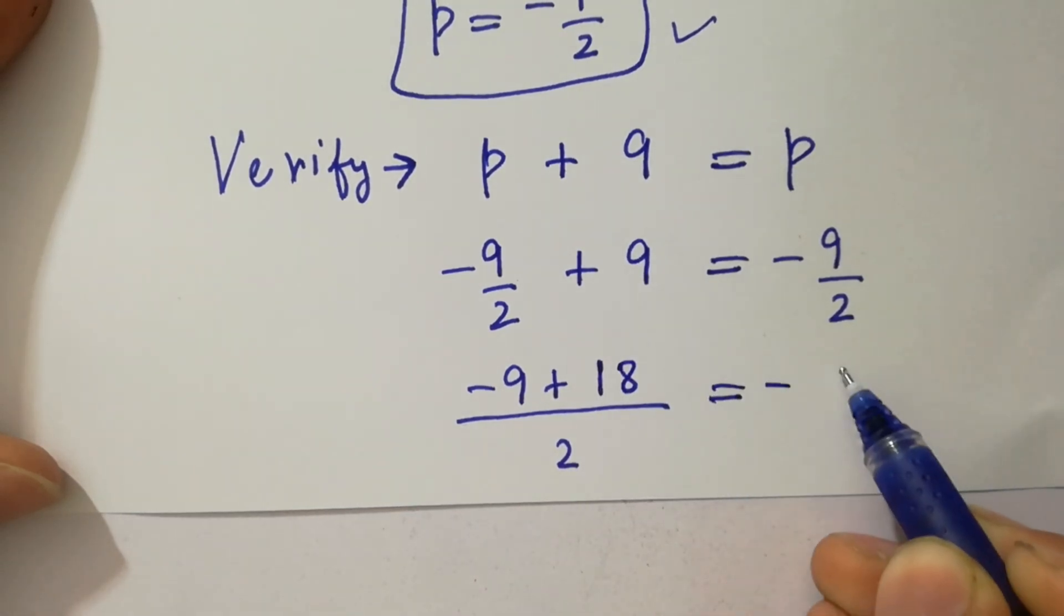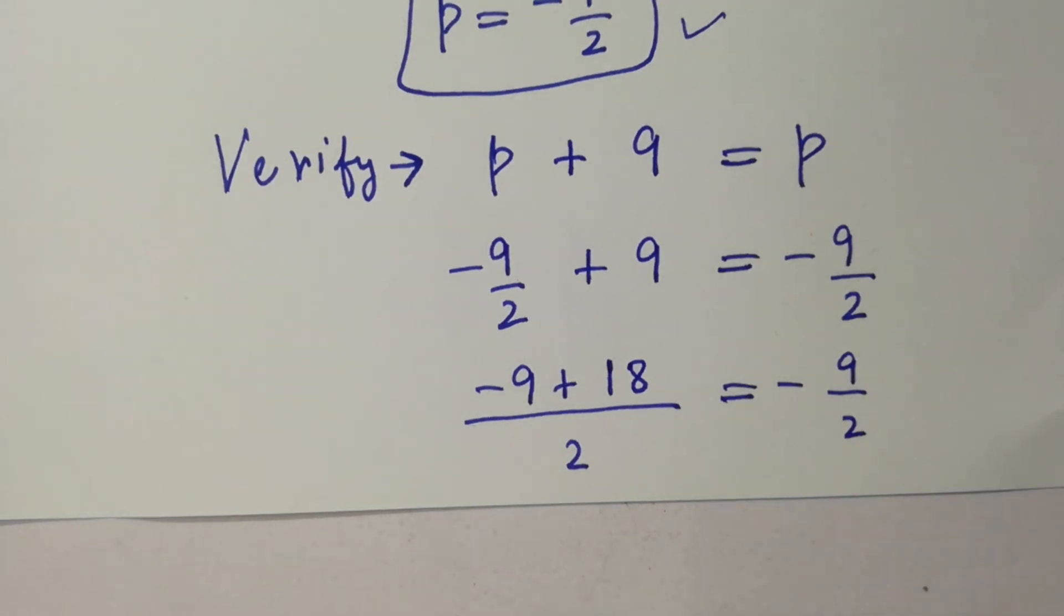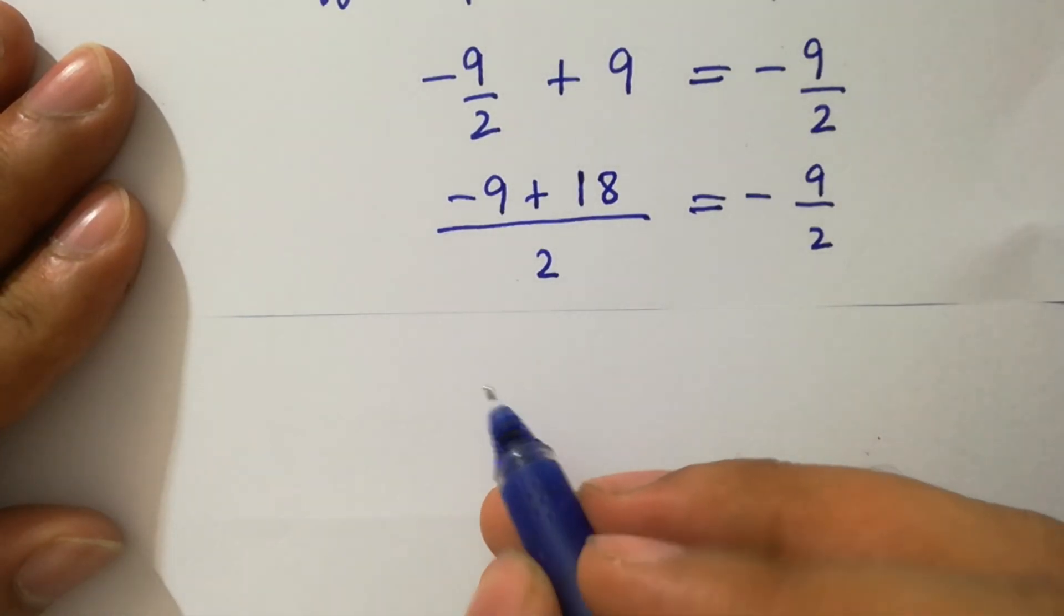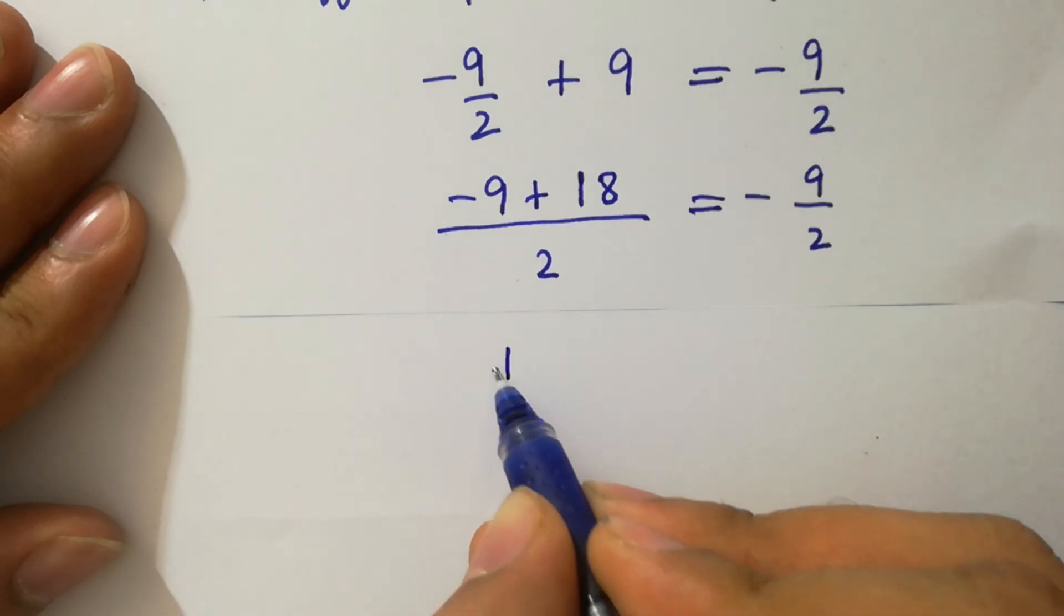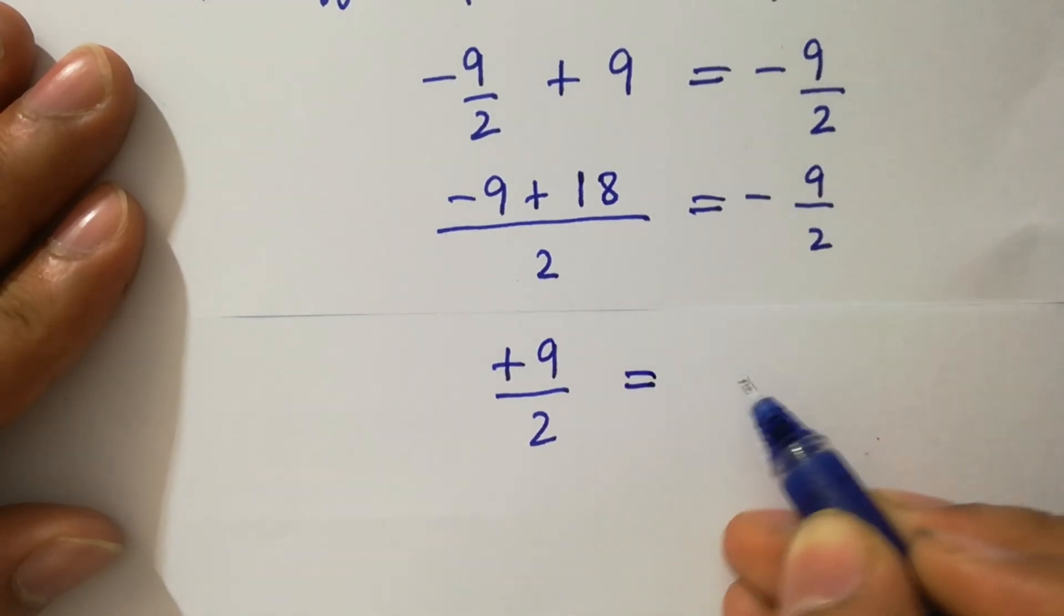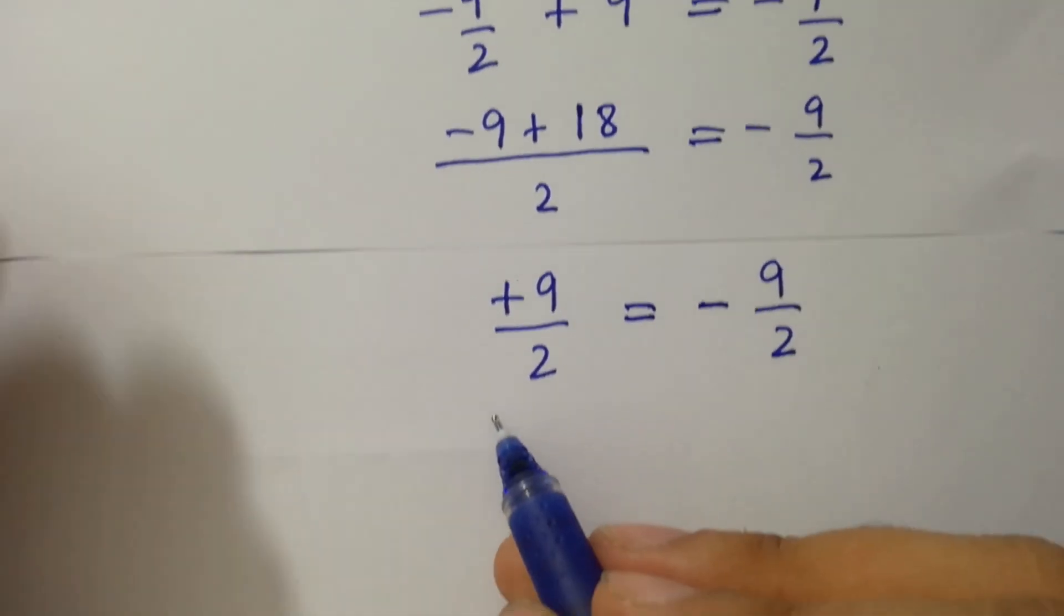Plus 9 over 2 equals minus 9 over 2. We have here plus 9 over 2 equals minus 9 over 2. You can see here left hand side...